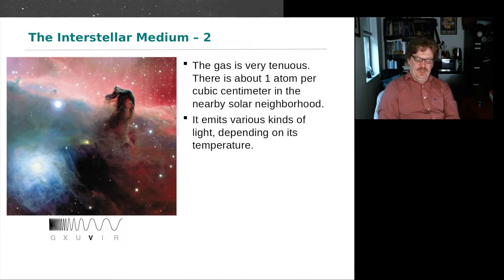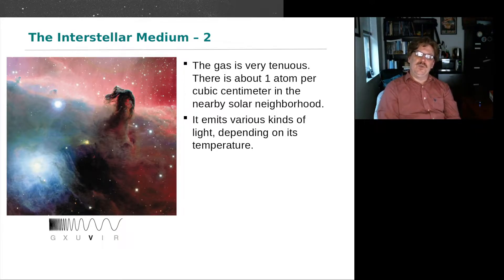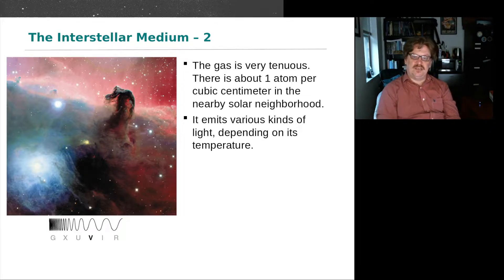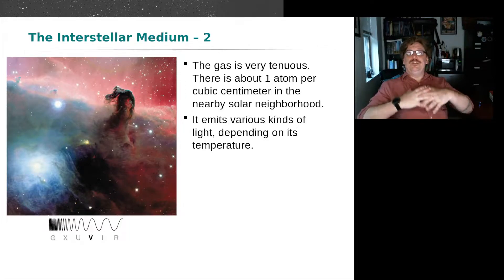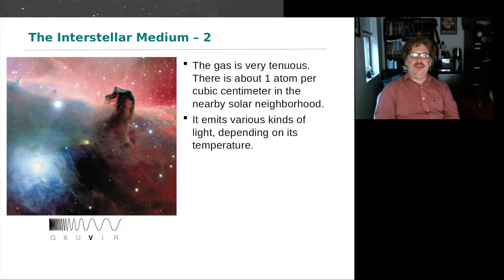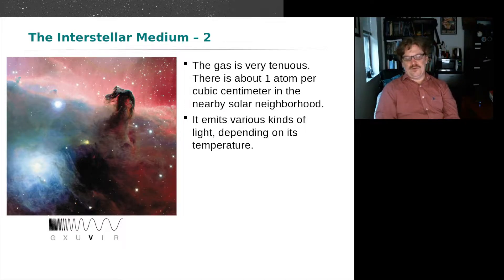This gas is very tenuous — about one atom per cubic centimeter around the solar neighborhood. The density of the interstellar medium is not constant and not homogeneous throughout the galaxy. Depending on the temperature in certain parts of the galaxy, that density is going to go up or down drastically. The interstellar medium is also responsible for creating its own energy. The gas and dust absorbs energy from surrounding stars and then re-radiates it in other directions, which we can observe.